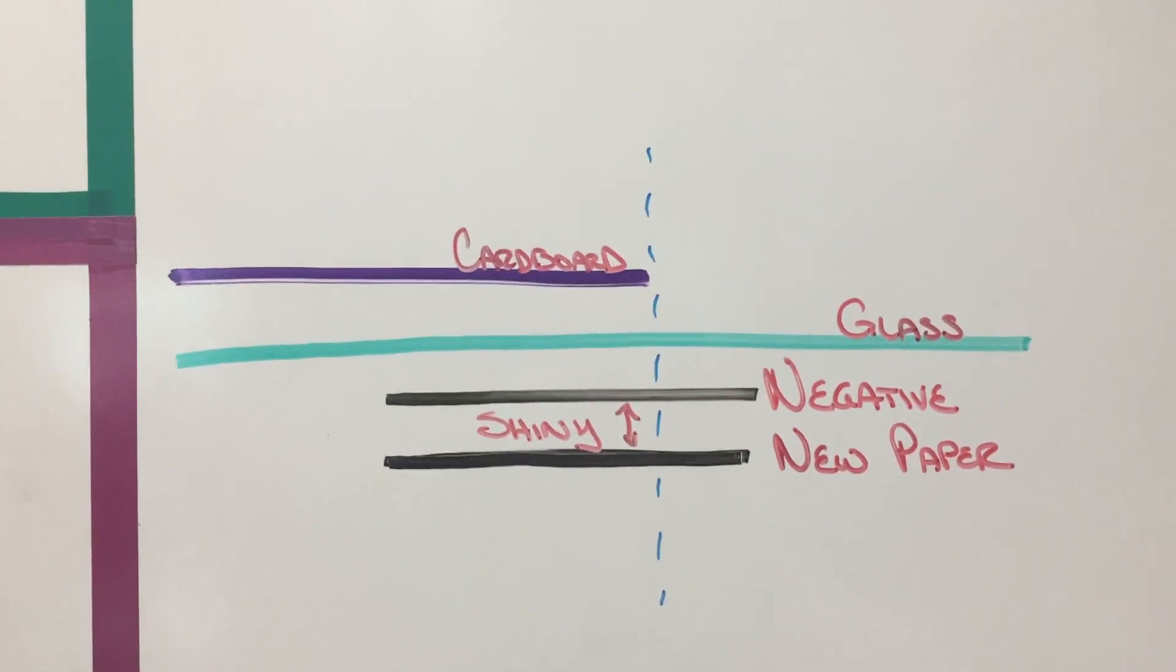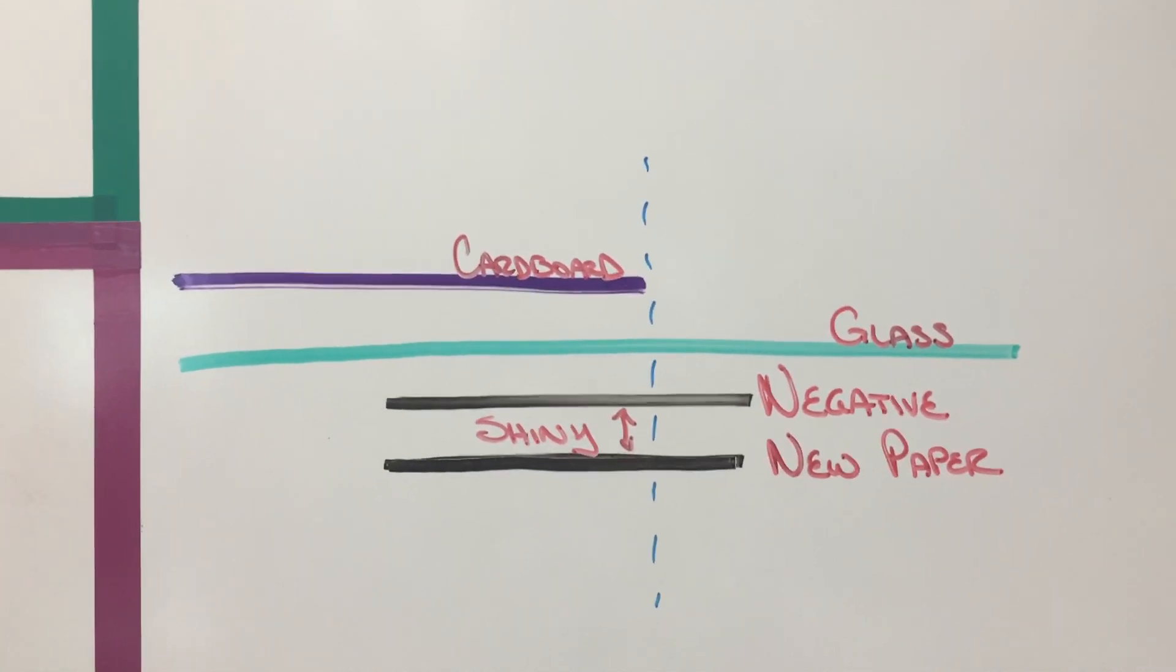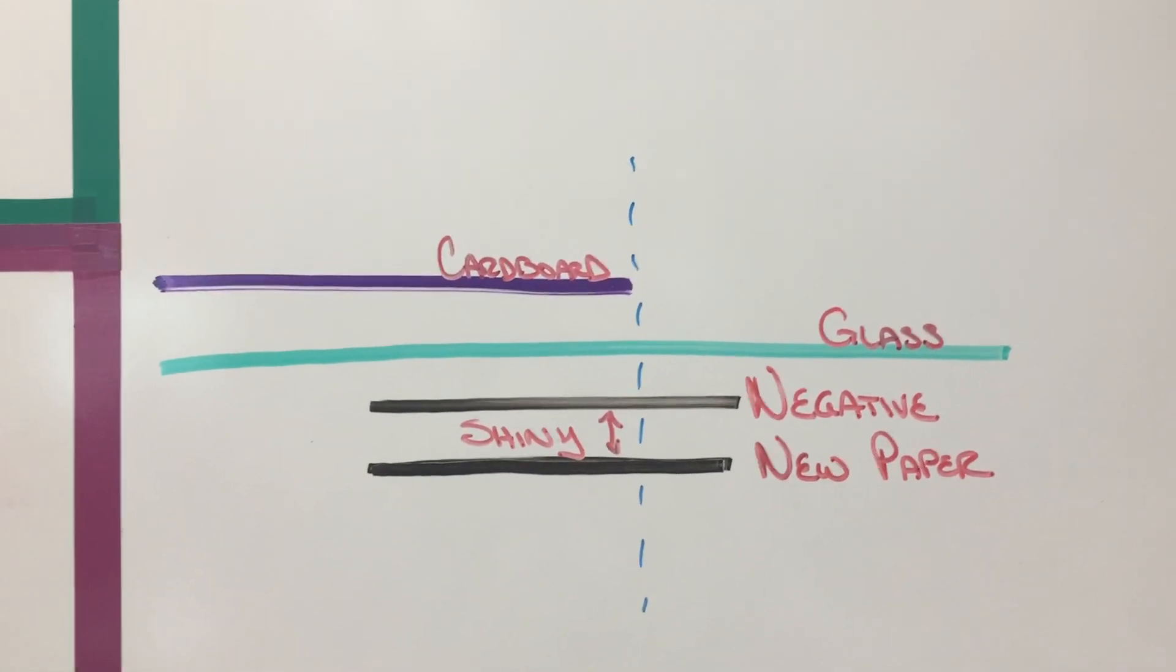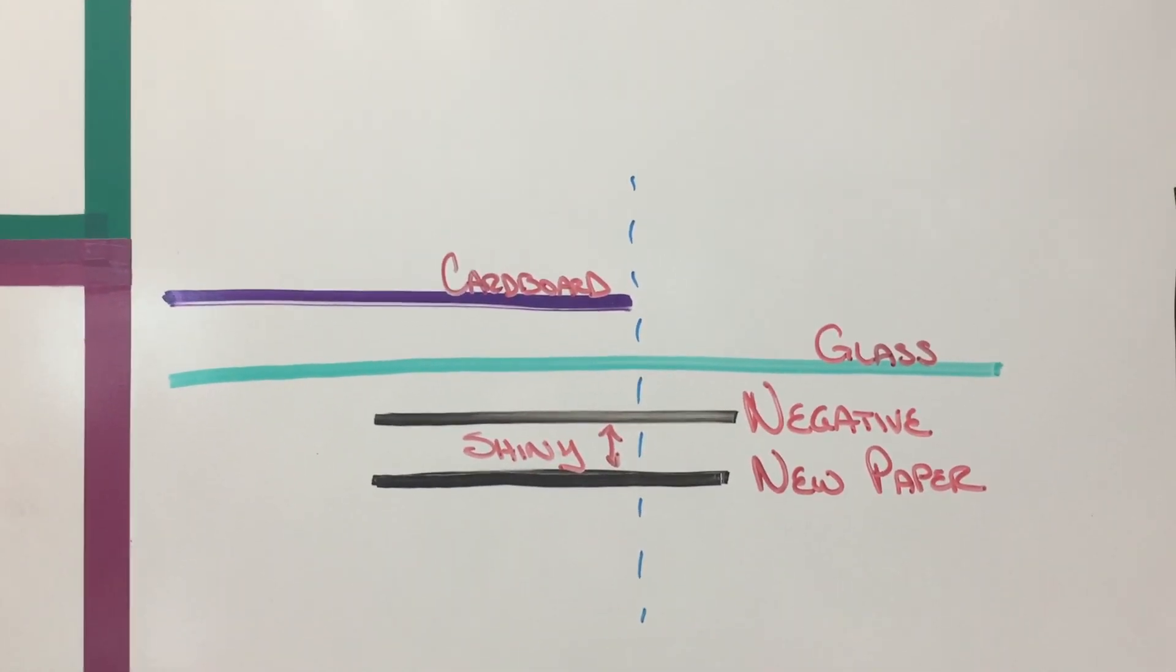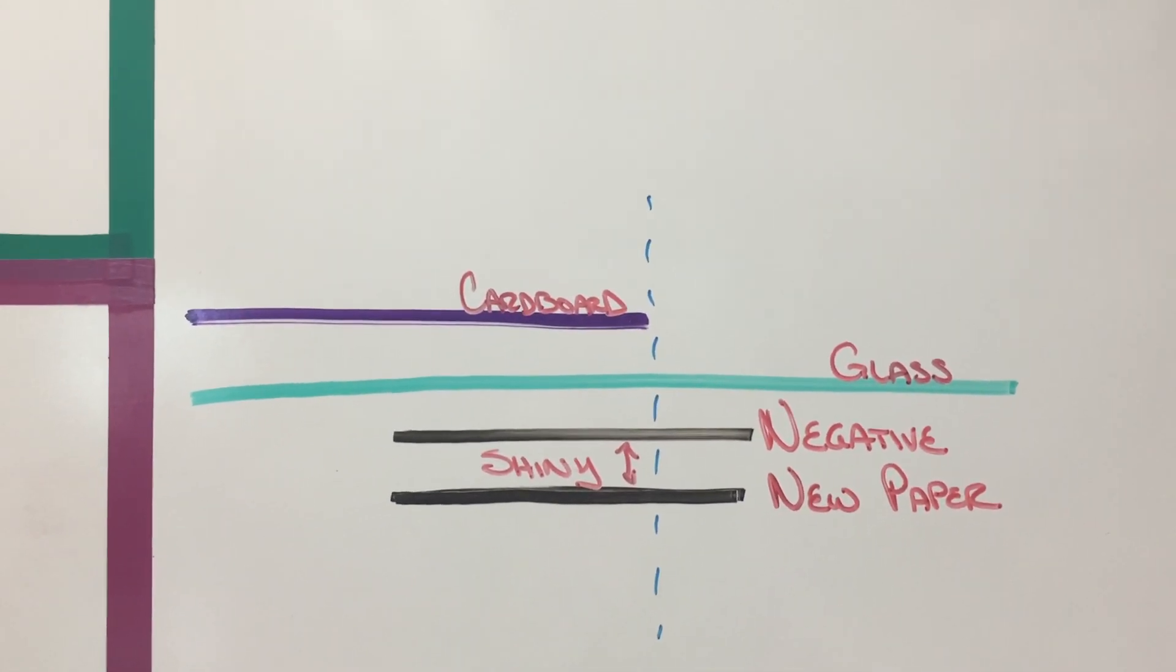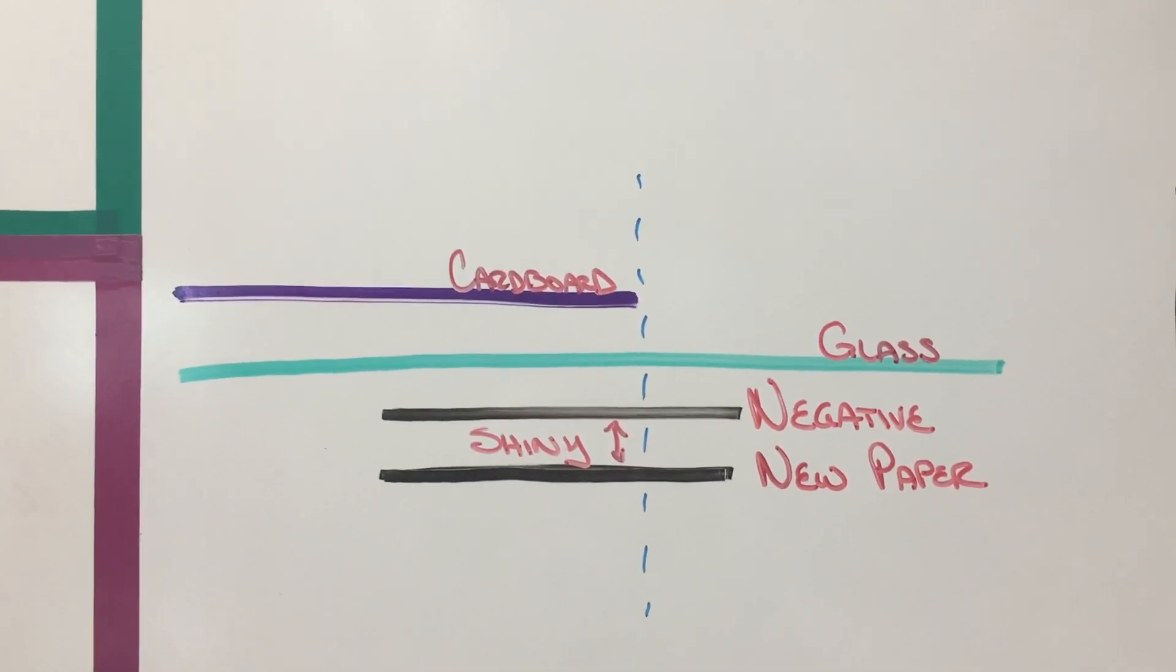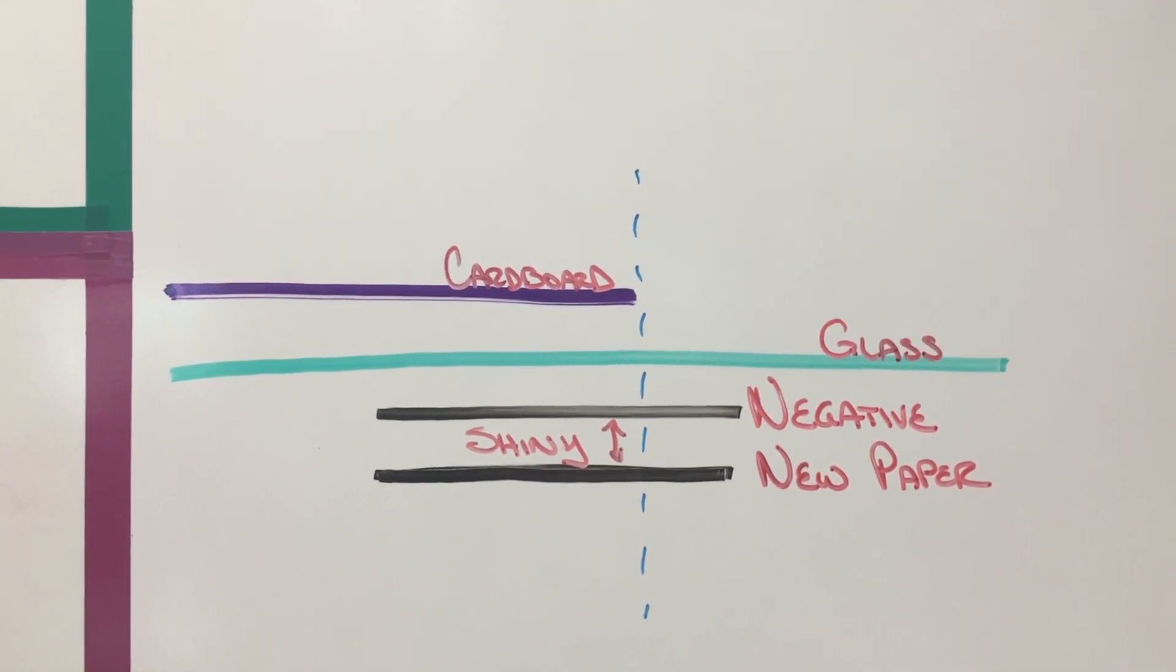New piece of paper on the bottom with the shiny side facing up and your negative face down on top. So you can see I have shiny written in the middle there of the negative and the new piece of paper so that those two sides are facing each other. The two shiny sides are against each other with that negative on top.